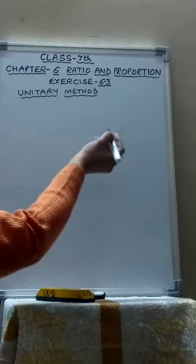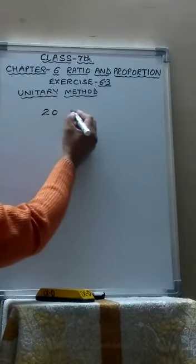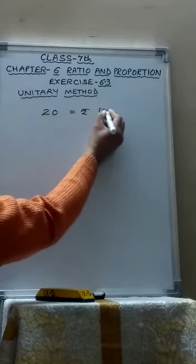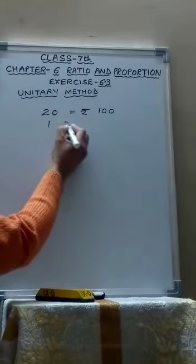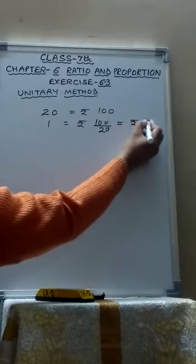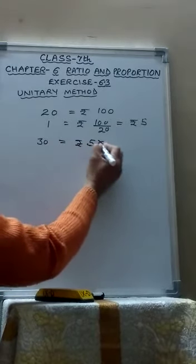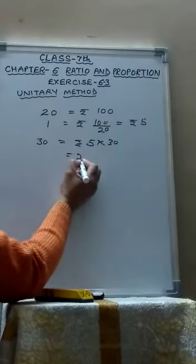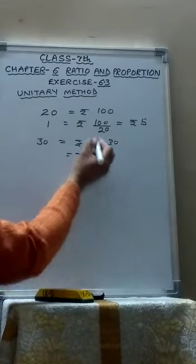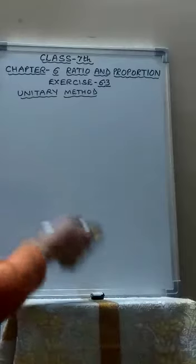Like suppose you go to a shop and suppose you are buying toffees. The cost of 20 toffees is rupees 100. So how will you find the cost of 1 toffee? You will divide 100 by 20 which means rupees 5. So what will be the cost of 30 toffees? Now you will multiply 5 with 30. So the cost of 30 toffees is rupees 150. So this is called the unitary method. First you find the value of 1 quantity. Then you find the value of other quantities. First you will divide, then you will multiply.